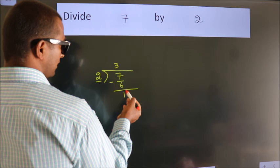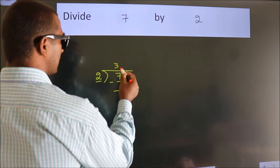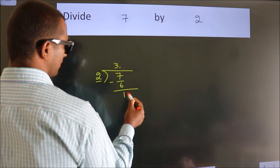After this, we do not have any more numbers to bring down. So what we do is, we put a dot and take 0.